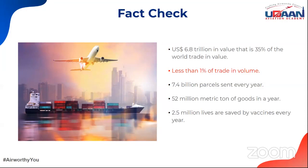This 6.8 trillion dollar value represents just 35 percent of the world trade, but in terms of volume it is just one percent. So 35 percent in value, one percent in volume — which means a very small consignment moves by air. This is going to change in coming years. The industry has grown at around three to four percent, but it is going to grow at a much faster pace. With one percent trade in volume, we have 7.4 billion parcels sent every year and about 52 million metric tons of goods transported every year.